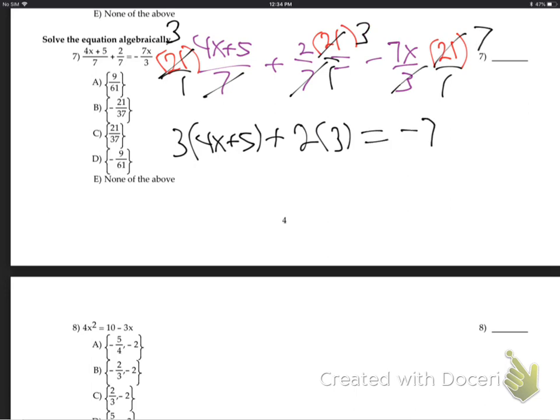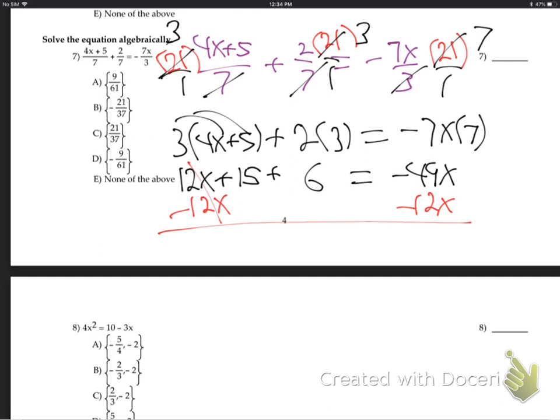So that'll be 3 times 4x plus 5. And then here, 7 goes into 21 three, so it'll be 2 times 3. And here, 3 goes into 21 seven times. It'll be minus 7x times 7. That step, that's the hardest step. After this, I know you can all do it easy. 12x plus 15, 2 times 3 is 6, minus 49x. We good there? How do we solve for x? Get rid of one of them. So minus 12x or either one, whatever.